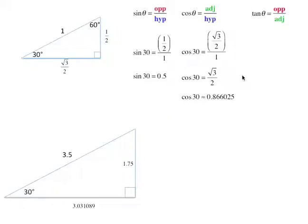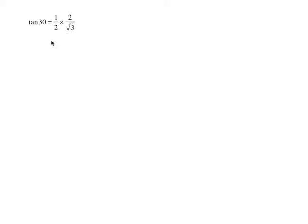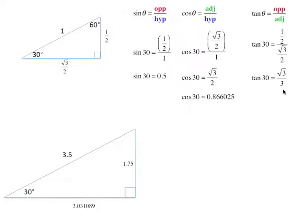The tangent of 30 degrees: tangent of theta is opposite over adjacent, so that's one half over √3/2, which equals one over √3. We can't have a square root in the denominator, so we rationalize by multiplying top and bottom by √3. The bottom becomes 3, the top becomes √3, so we get √3 over 3. Mathematicians will chuckle at you if you leave a root as your denominator. Using a calculator, that gives approximately 0.577350.